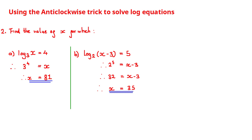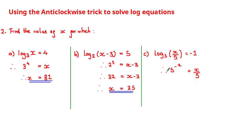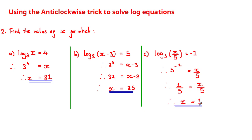Let's look at the next example. Here we have log base 5 of (x over 5) is equal to minus 1. Using the anti-clockwise trick this is equivalent to 5 raised to the power of negative 1 is equal to x over 5. Since 5 to the negative 1 equals 1 over 5, we have 1 over 5 equals x over 5, and multiplying both sides by 5 gives x is equal to 1.